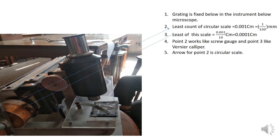The circular scale will have a least count of 1/100 mm, or 0.001 centimeter. Similarly, the least count of the third scale — like a screw gauge — will be 0.01 divided by 10, so 0.0001 centimeter.